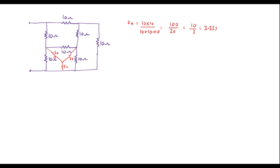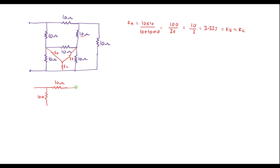Here all the resistors are having the same values. Therefore R_A is also equal to R_B, which is also equal to R_C. Let me redraw the circuit. Here I will keep these three resistors as they are — this is 10 ohm, I will connect as it is, this is 10 ohm, and here this 10 ohm is connected as it is.